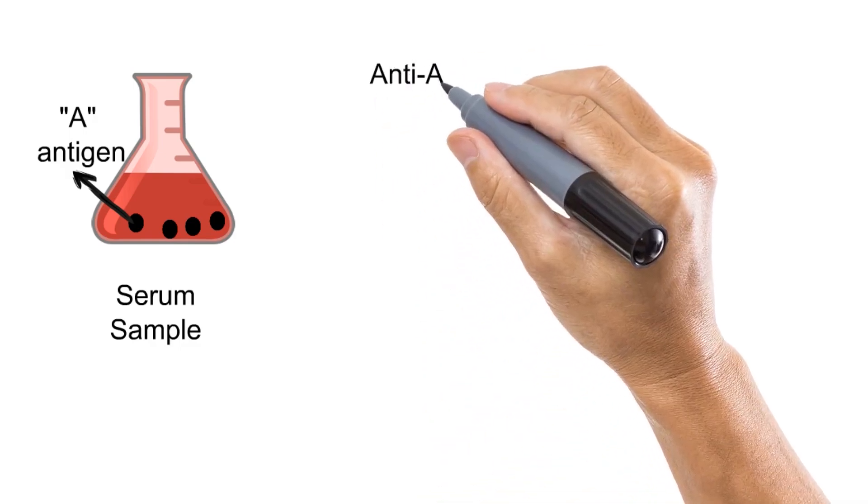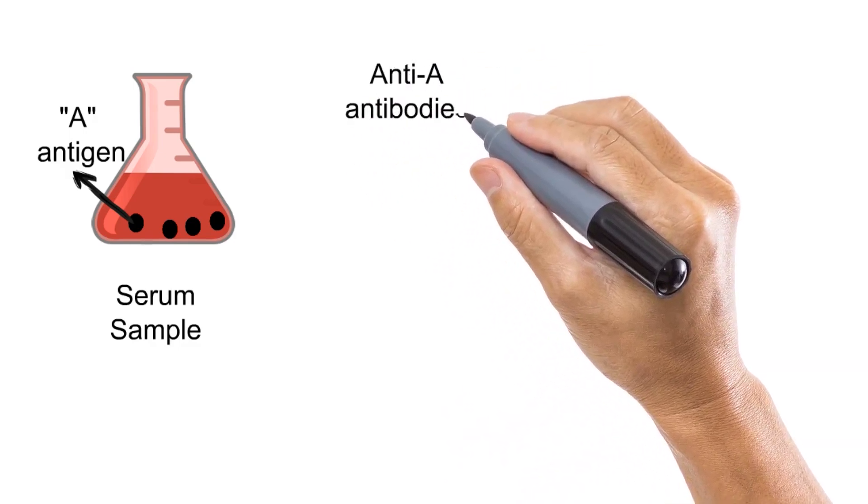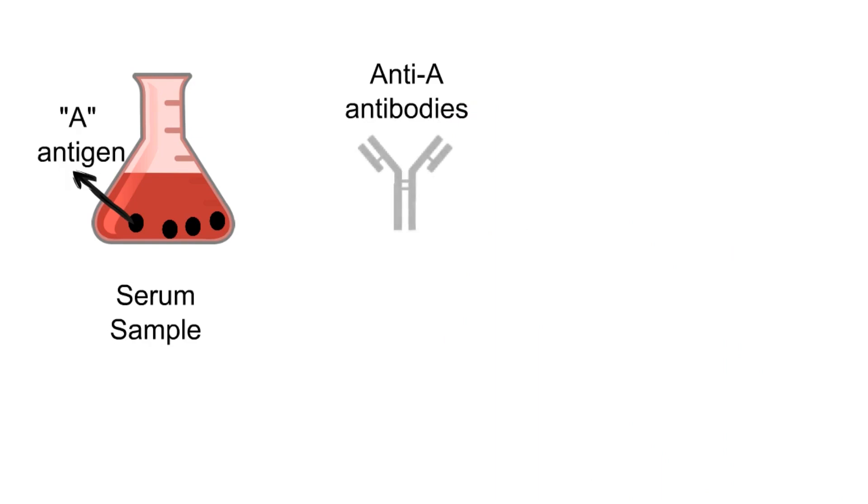Suppose we want to detect the presence of A antigen in a serum sample using Sandwich ELISA. For this, we will require a few things. The first is antibodies specific to the antigen to be detected. So in this case, we want to detect the presence of A antigen, that's why we will need anti-A antibodies.